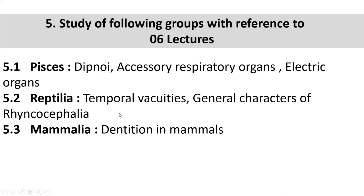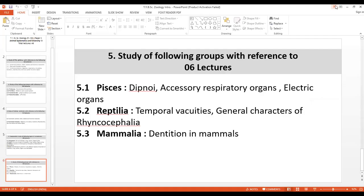In Reptilia, a special and important feature is temporal vacuities - that is the basis for reptilian classification. Temporal vacuities means a cavity or two cavities in the skull; classification of reptiles depends on that. For Mammalia, the dental formula is studied - dentition includes incisors, canines, premolars, molars and all. So we have made an idea of the complete syllabus. Is it clear for one and all?